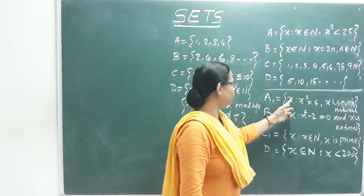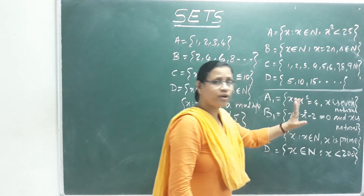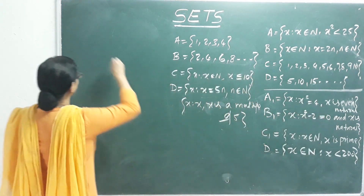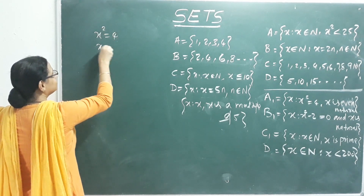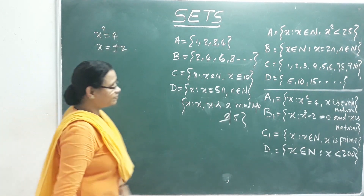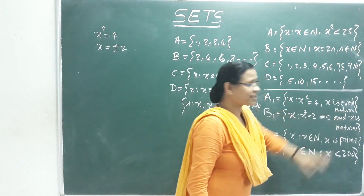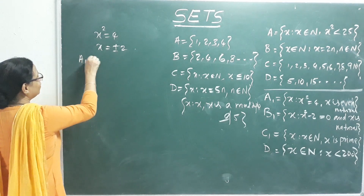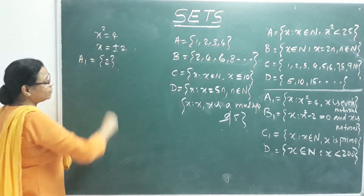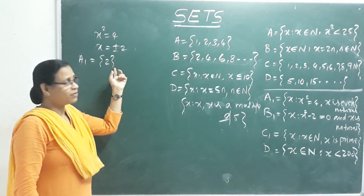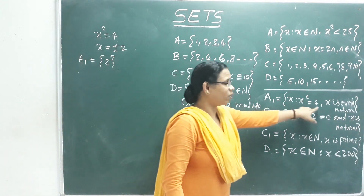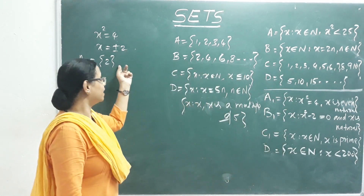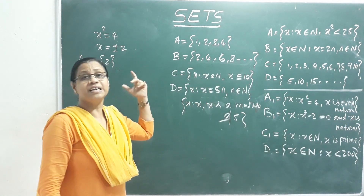Next question: A1 = {x : x² = 4}. Solving, x = ±2. Since we need even natural numbers, x = 2 only. So A1 = {2}, which is a singleton set. This was given in set builder form and we converted it to roster form.